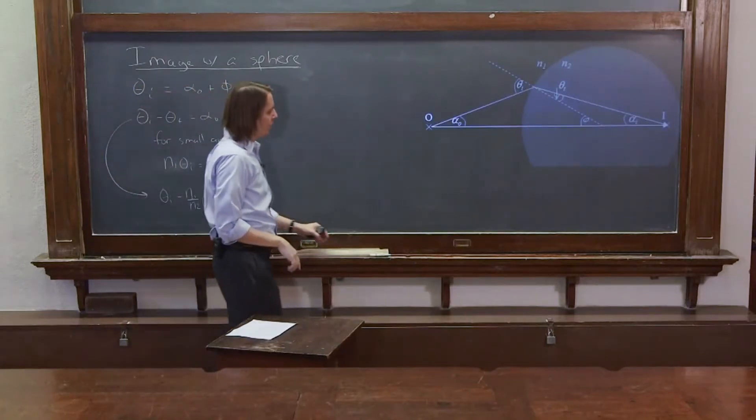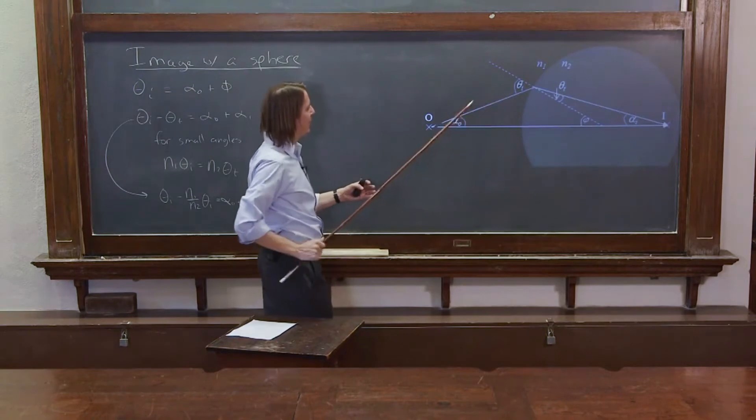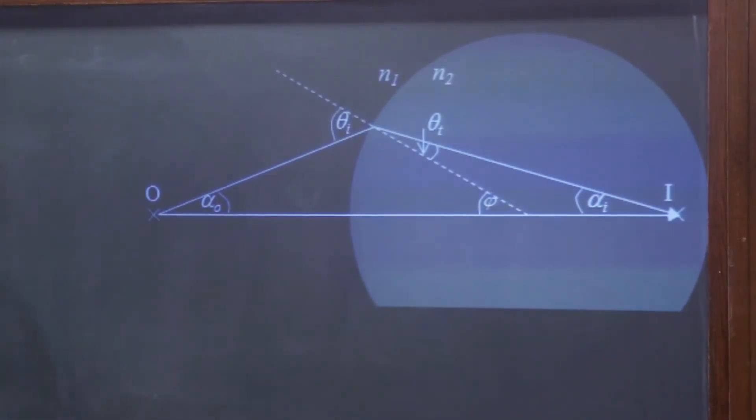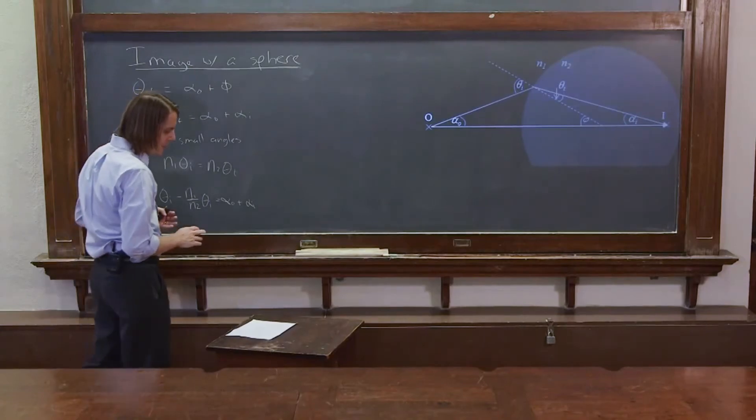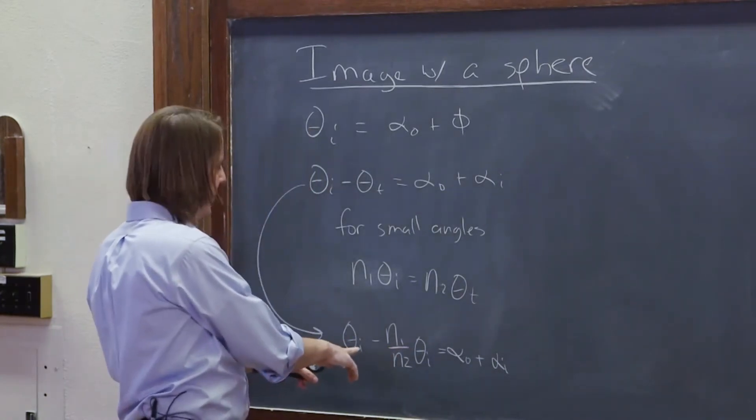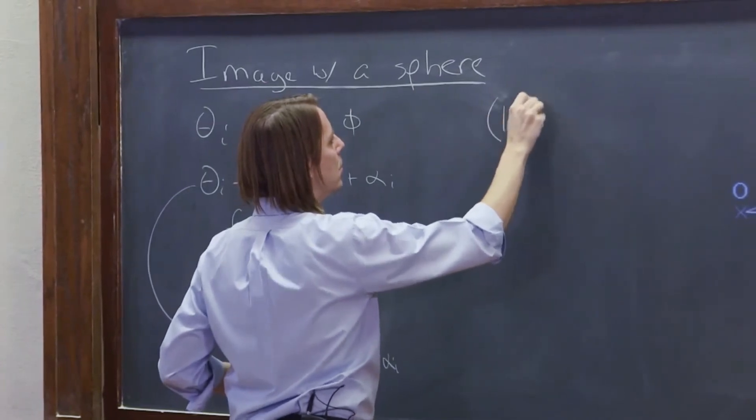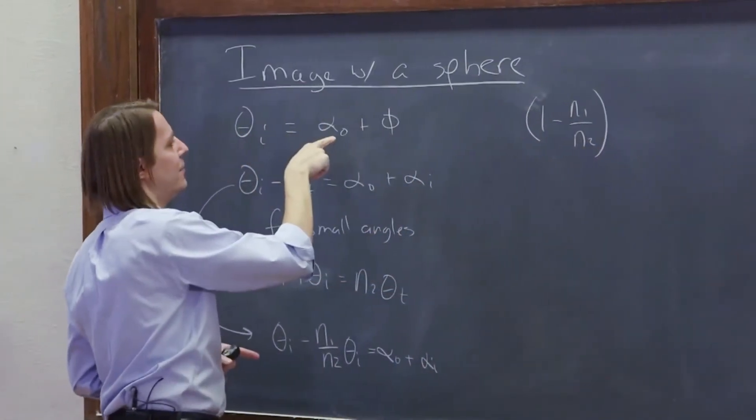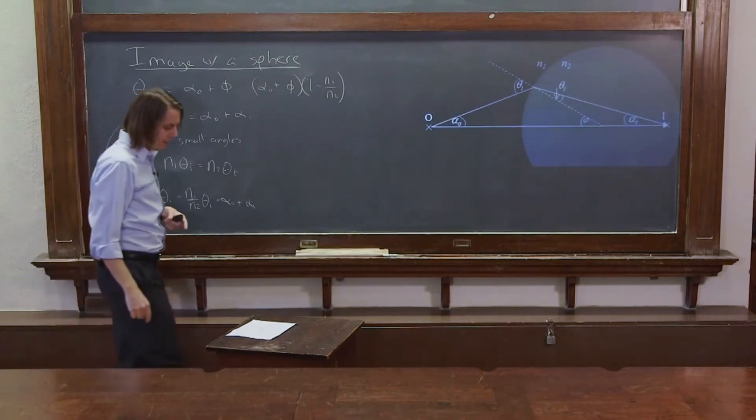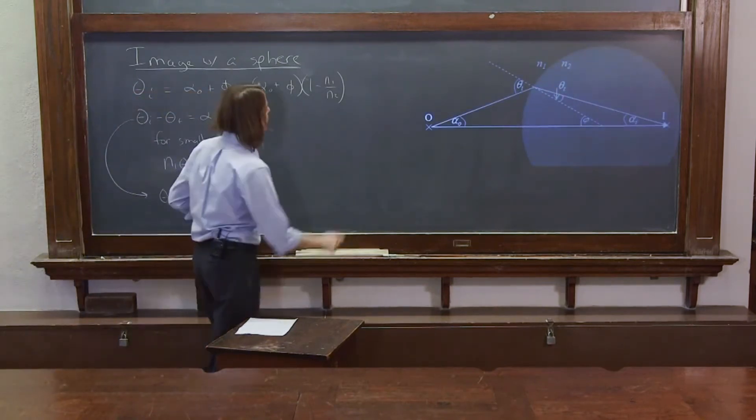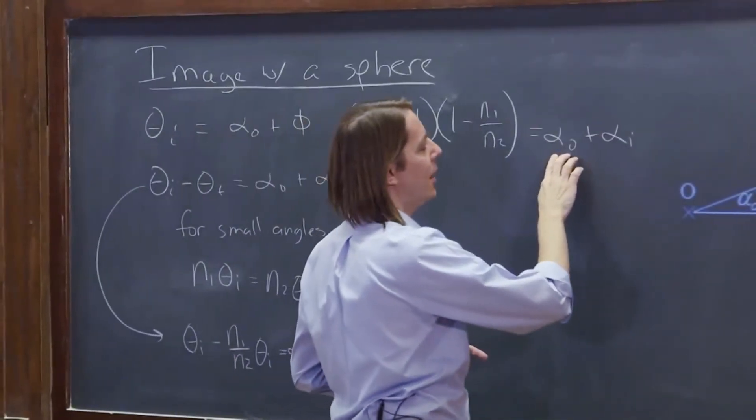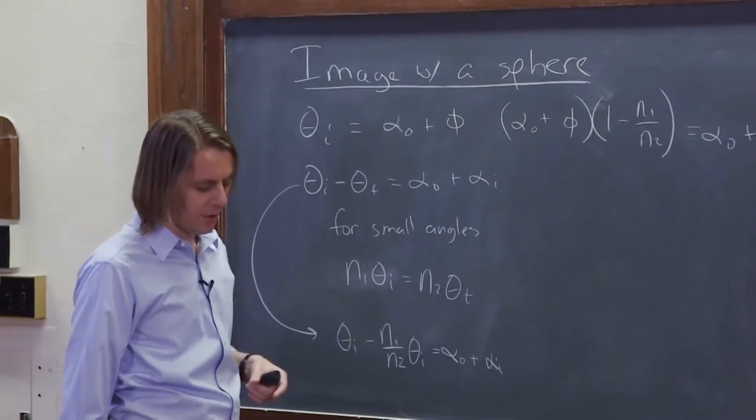Now what we want to do is work towards really properties just of the sphere. We don't want to derive something about what happens at a certain specific point or light at a certain specific angle. We want to know what does the sphere do to light from any point or at any angle. So to do that, we need to get rid of theta i. So we're going to pull theta i out of here. It'll be theta i times 1 minus N1 over N2. But instead of writing theta i, we'll write alpha naught plus phi because those are properties of the sphere. And then that is going to be equal to still alpha naught plus alpha i, the angle from the object, angle to the image for that one ray.